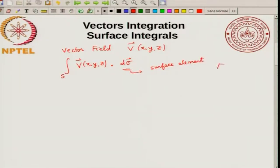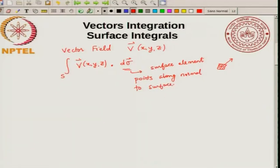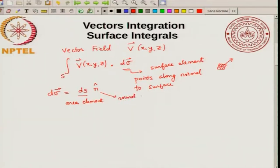The surface element dσ is a vector. It will be a small region of the surface pointing along the normal to the surface. In other words, I can write dσ as dS·n̂, where dS is an area element and n̂ is a normal vector. So dσ is an area vector, and the range of integration is the surface — you integrate over a surface S.